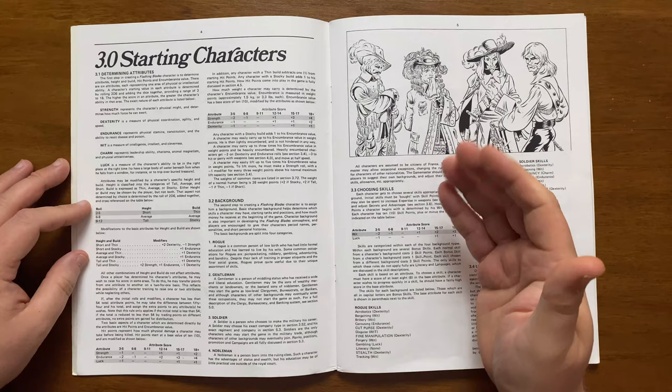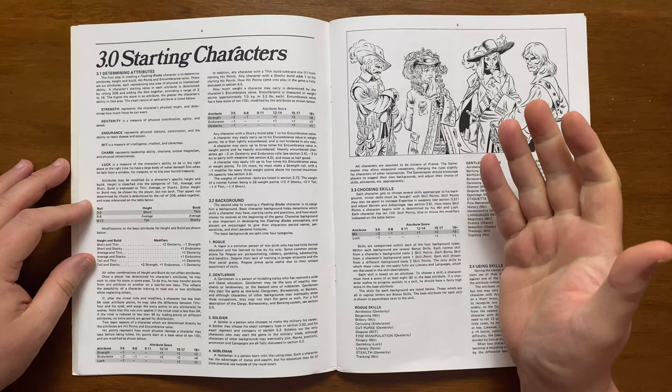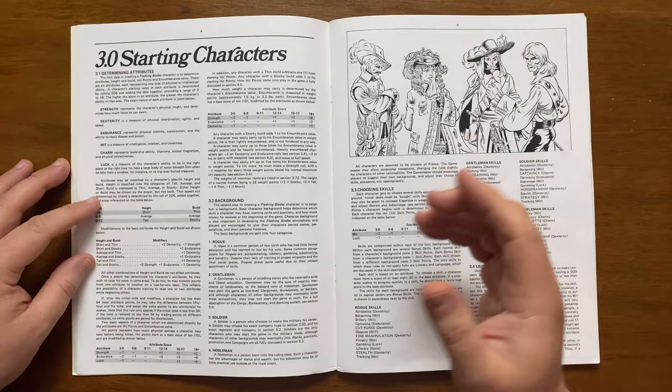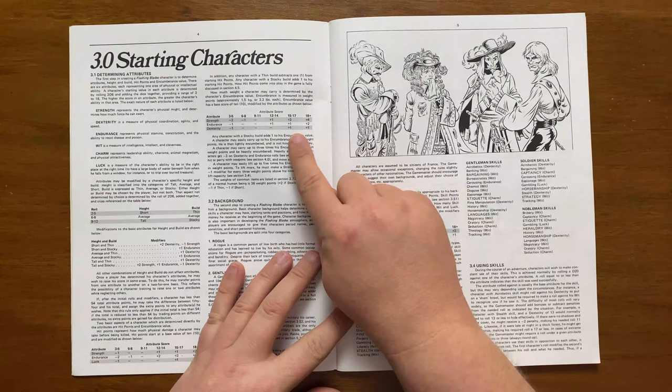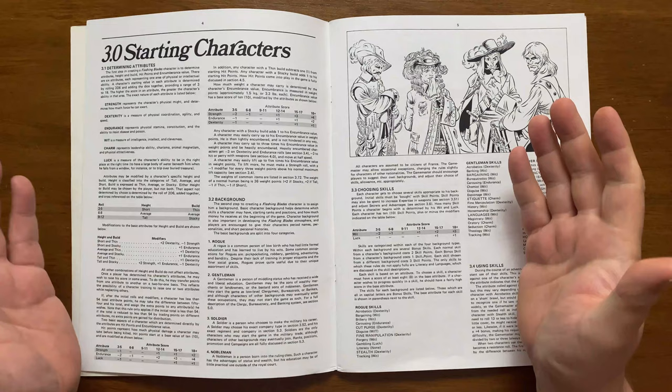After this, if the total attributes don't add up to 54, then they can take the difference and raise their scores. They can also transfer points between stats on a 2 for 1 basis. All characters start with 10 hit points, with additional ones gained through a combination of Strength, Endurance and Luck as listed on this table here. Build can also affect hit point total. Encumbrance is similarly determined on this table here, with Build again affecting carrying capacity.